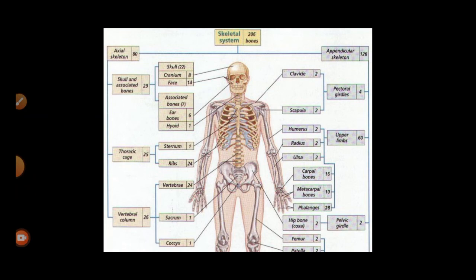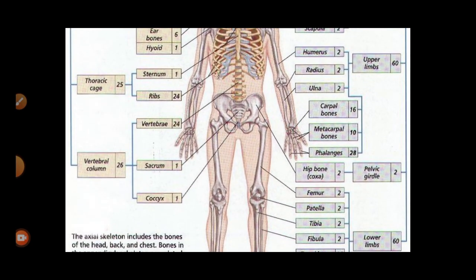The skeleton contains 206 bones divided into two parts: axial skeleton and appendicular skeleton. The axial skeleton contains 80 bones while the appendicular skeleton contains 126 bones. The axial skeleton is divided into the skull and associated bones, the thoracic cage, and the vertebral column. The thoracic cage has 25 bones — sternum and 12 pairs of ribs. The vertebral column has 26 bones — cervical, dorsal, lumbar, sacrum, and coccyx. In the appendicular skeleton, the clavicle and scapula form the pectoral girdle, also called the shoulder girdle, forming the shoulder joint.